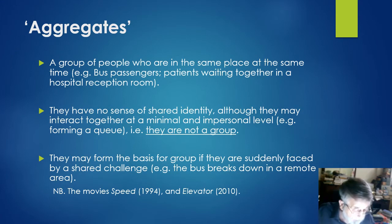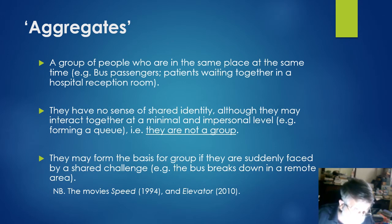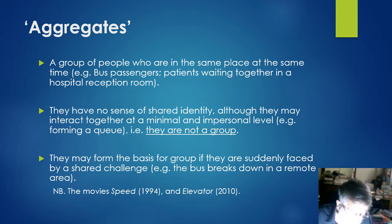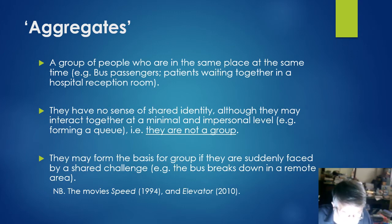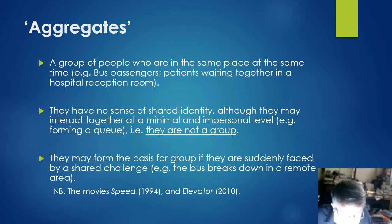Now, aggregates. Social groups should also be differentiated from aggregates, which are simply temporary collections of people who are in the same place at the same time, as for example, passengers on a bus, spectators at a sporting event, or people waiting together in a doctor's surgery or an airport lounge. They may interact together at some minimal and impersonal level, like forming a queue, for example, but they have no sense of shared identity.